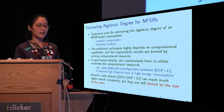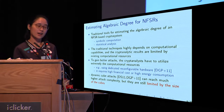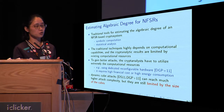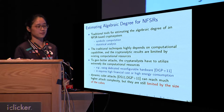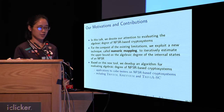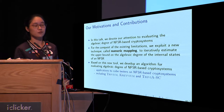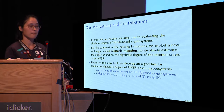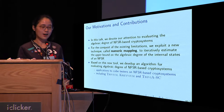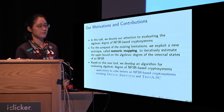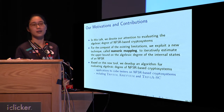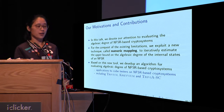To gain better attacks, one has to utilize more computational resources, which could turn out to be very expensive. In this talk, we devote our attention to evaluating the algebraic degree of NFSR-based cryptosystems. To overcome the existing limitations, we exploit a new technique called numeric mapping to iteratively estimate the upper bound on the algebraic degree for NFSR systems.